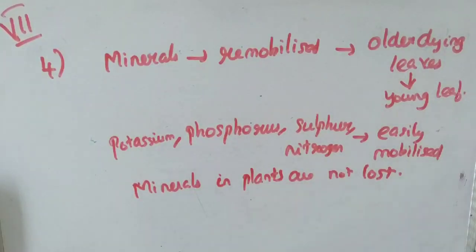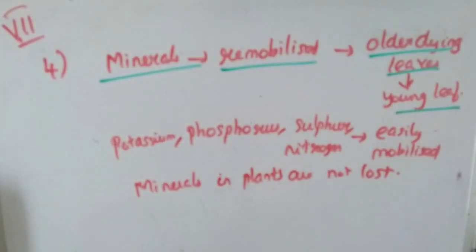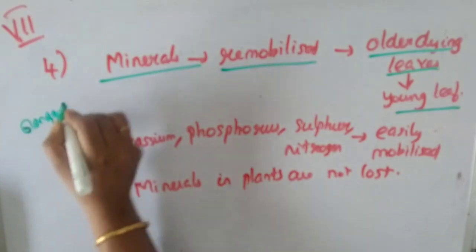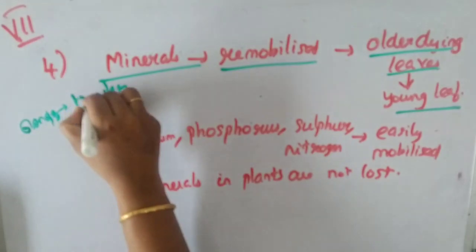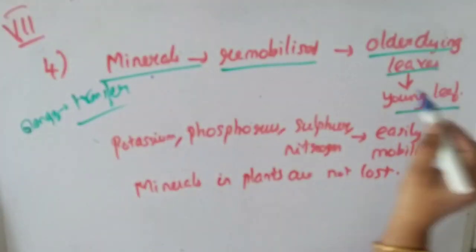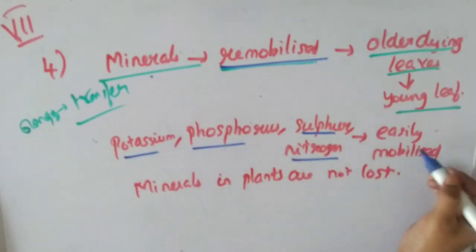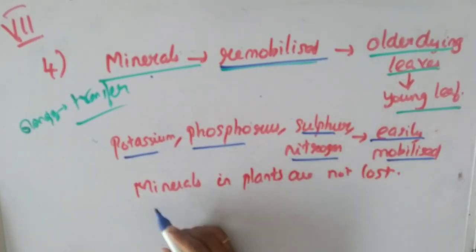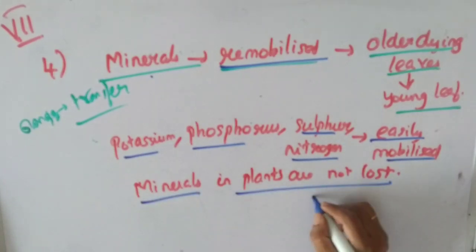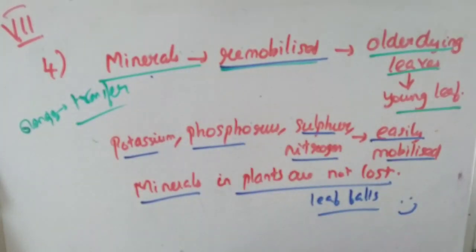Question 4: Minerals in plants are not lost when the leaf falls — explain. Minerals will be remobilized from older dying leaves and transferred to younger leaves or growing parts. Minerals such as potassium, phosphorus, sulfur, and nitrogen are easy to remobilize. However, some minerals that cannot be remobilized will be lost when the leaf falls.